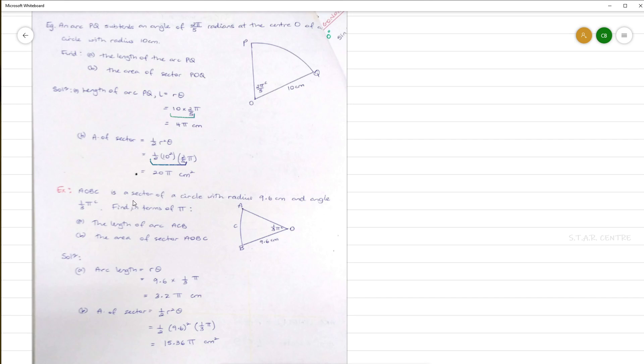Exercise: AOBC is a sector of a circle with radius 9.6 cm and angle 1/3 π radians. 1/3 π radians can also be expressed as π over 3 radians. Find, in terms of π, the length of arc ACB. Our solution: arc length is equal to r θ. Substituting r, which is the radius, 9.6, and θ is 1/3 π or π over 3. When we are simplifying, just as before, we just need to simplify this part of it and leave our answer in terms of π. Our final answer is 3.2π cm.